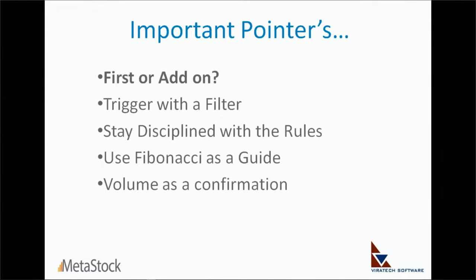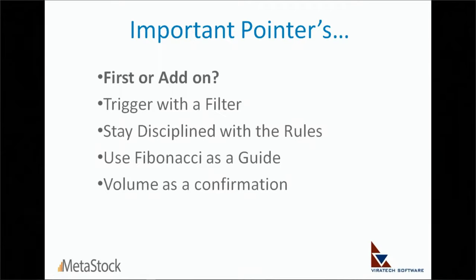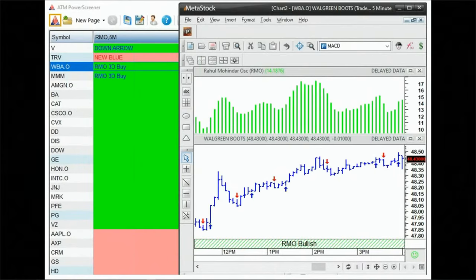Fibonacci can be used as confirmation — the 0.618 level breaking out along with the RMO is a very relevant signal. Volume confirmation also matters: when you plot the RMO Trade Model template, it automatically includes a 50-period exponential moving average of volume. Whenever you get a new breakout try to see at least above-average volumes — not necessarily double average, but just slightly above. A long-term breakout with below-average volumes should make you think twice before taking that trade.